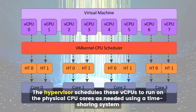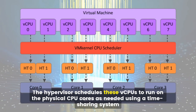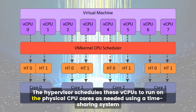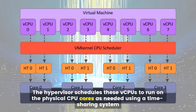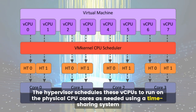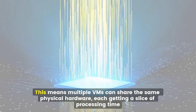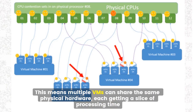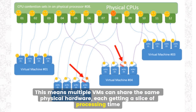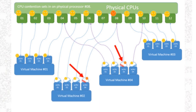The hypervisor schedules these vCPUs to run on the physical CPU cores as needed, using a time-sharing system. This means multiple VMs can share the same physical hardware, each getting a slice of processing time.